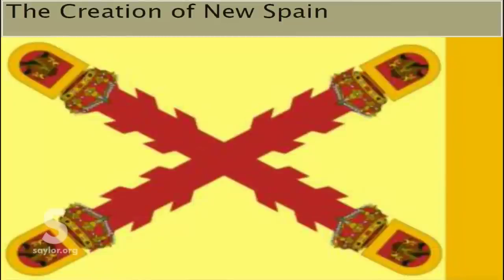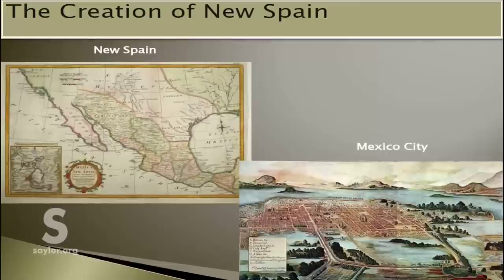After the destruction of Tenochtitlan, Hernán Cortes became the governor of what was to become New Spain. One of Cortes' first orders was the destruction of any reminders of the Aztec culture and the reconstruction of the city, this time as Mexico City. His other orders included the Christianization of the natives, the implementation of the encomienda labor system, and the transport of African slaves to the territories he governed. Thus, the Aztec Empire had been fully assimilated into the Spanish Empire.